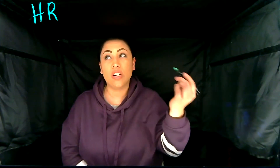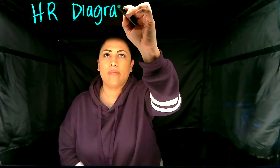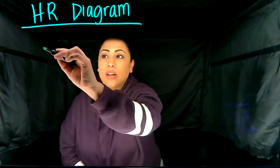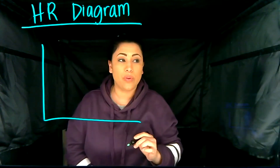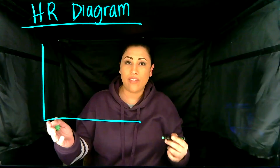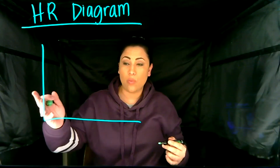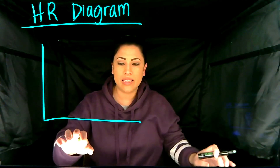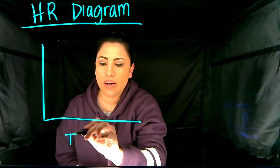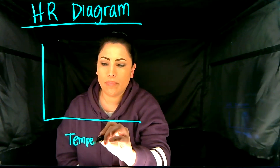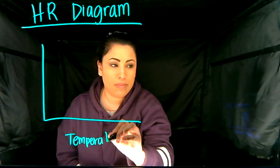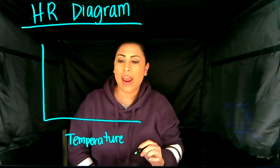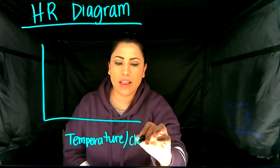Go ahead and label your page of notes — get out your notebooks or a sheet of paper — HR diagram. So it's kind of like a chart, and we're going to draw a graph. We have our x-axis and our y-axis. Down here on the x-axis, this is typically going to be your temperature, and this can also be called the class.